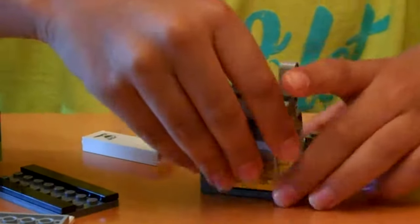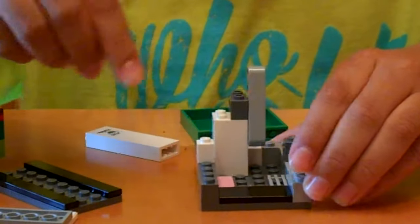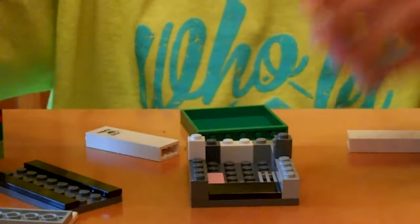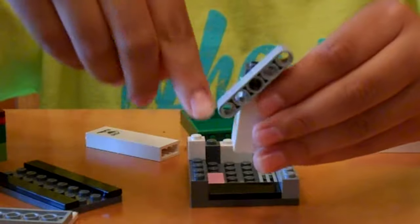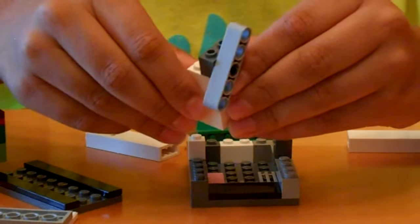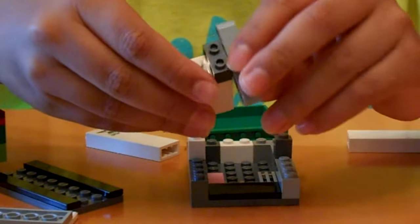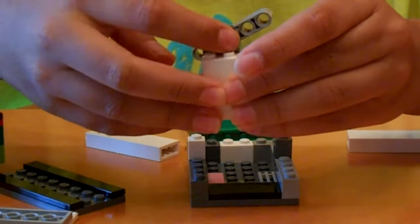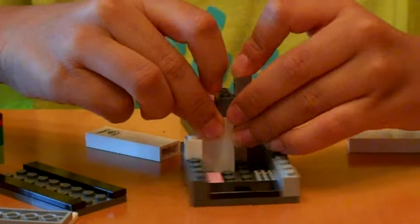So you want to start off with the mechanism here. You want a 5x1 beam and a 2x2 pillar like that. And you want a 2x1 with holes in it. And you place that right here and make sure it's aligned straight.